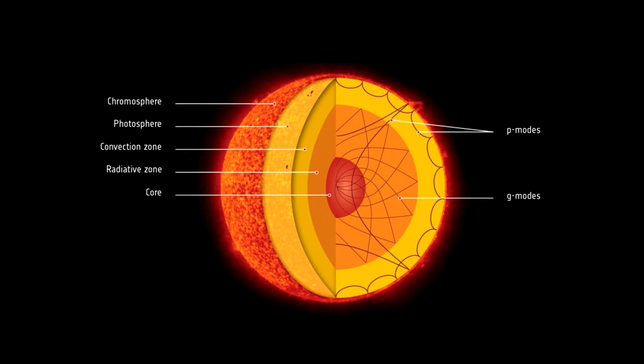Above the radiative zone is the convective zone. Here, hot plasma rises to the surface, cools and then sinks back down, creating convection currents. This churning motion helps transport energy to the sun's surface.